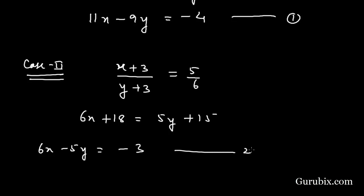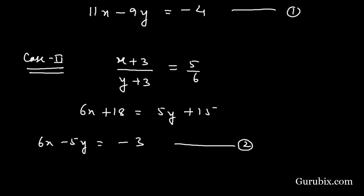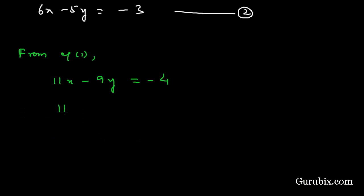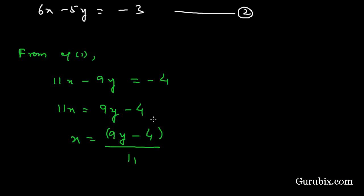Now we shall use the substitution method to solve these equations. Starting with equation number 1: 11x − 9y = −4. We keep 11x on the left hand side and take −9y to the right hand side, making it positive 9y, so x = (9y − 4) / 11. We shall substitute this value into equation number 2.